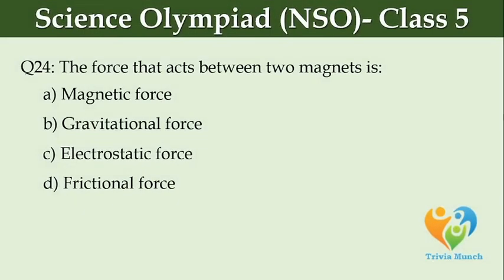The force that acts between two magnets is dash. Option A, magnetic force. Option B, gravitational force. Option C, electrostatic force. Option D, frictional force.